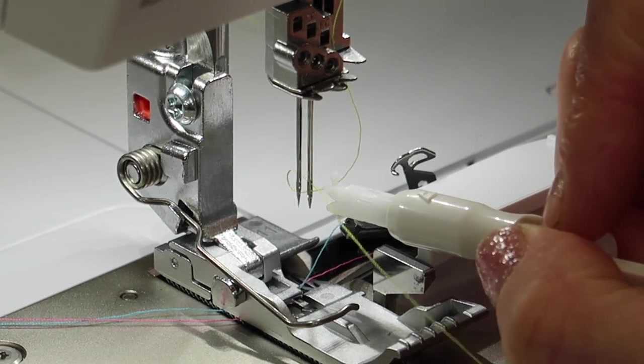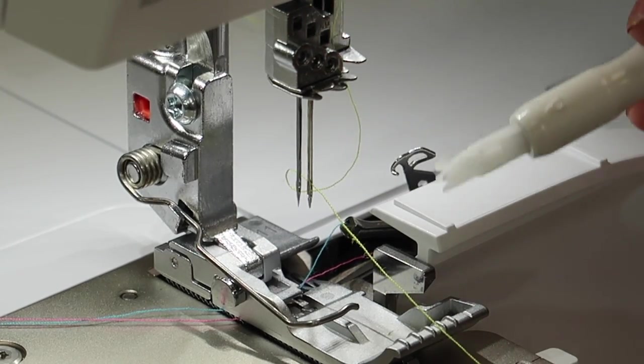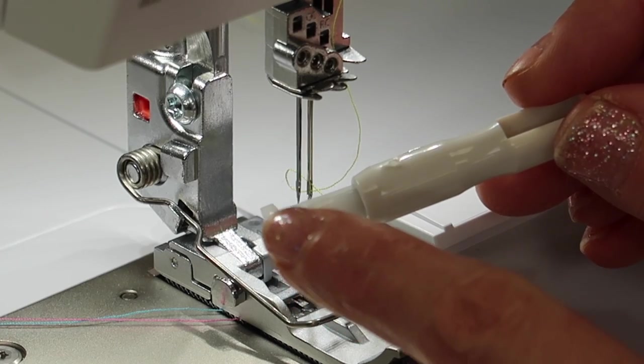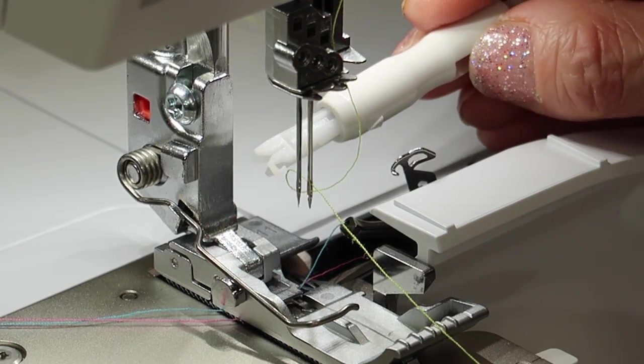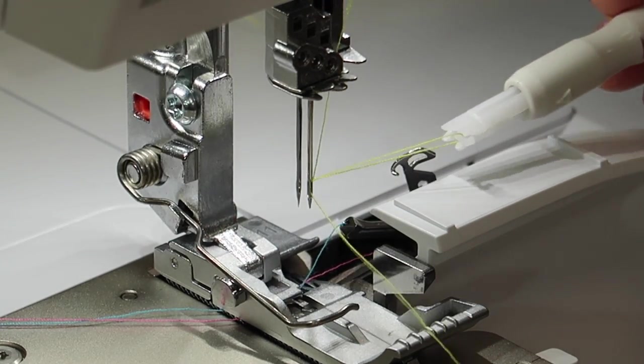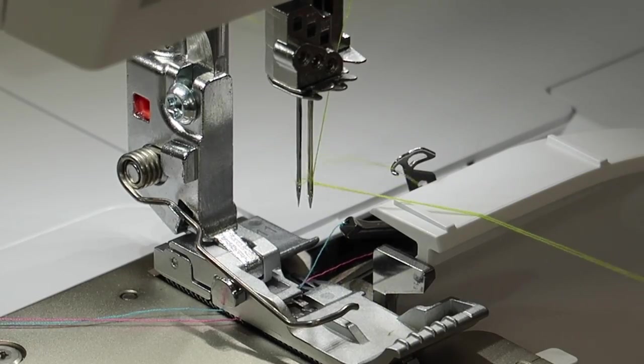Then just bring it gently out, leaving that loop of thread. This needle threader actually has a little hook on the end, allowing me to just reach behind the needle and pull that loop all the way through.